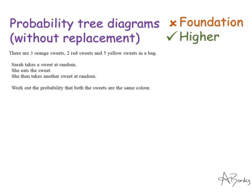This next example is much more complicated for two main reasons: they haven't given me a tree diagram so I have to draw it myself, and secondly there are three choices — orange sweets, red sweets, and yellow sweets — not just two options. The question says Sarah is going to take a sweet at random from the bag, eat it (so not replacing it), and then take another sweet at random. We need to work out the probability both sweets are the same colour. On the first pick there are three branches: orange, red, and yellow.